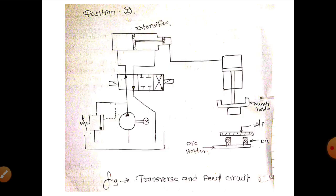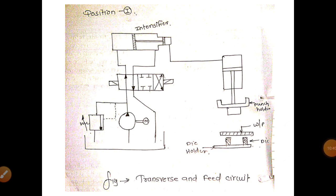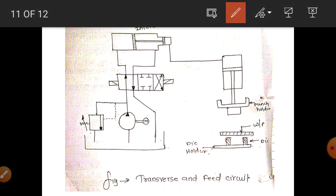This is the circuit diagram of the traverse and feed circuit. It consists of a reservoir, pumps, and a directional control valve — specifically a 4 by 3 directional control valve. The components of the traverse and feed circuit are: reservoir, pump, directional control valve, actuator, and intensifier. The intensifier is a key instrument in this circuit. This is the application-based circuit diagram of the traverse and feed circuit, also showing the pressure relief valve.